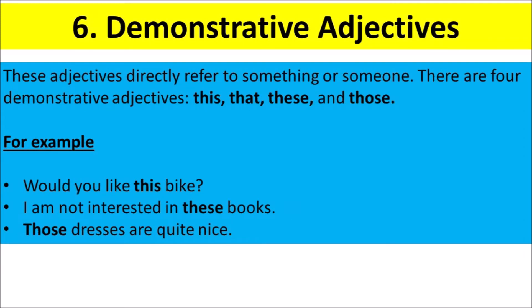Demonstrative Adjectives. These adjectives directly refer to something or someone. There are four demonstrative adjectives: this, that, these, and those. For example, Would you like this bike? I am not interested in these books. Those dresses are quite nice.